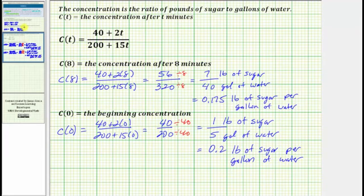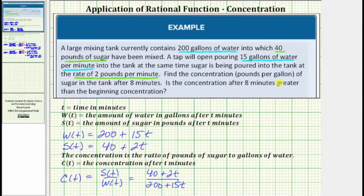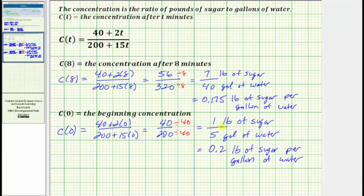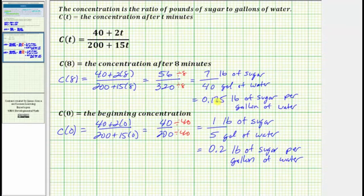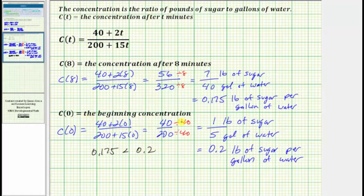The last question was: is the concentration after eight minutes greater than the beginning concentration? It's much easier to compare concentrations as decimals rather than as ratios. The concentration after eight minutes is 0.175 pounds of sugar per gallon of water. The beginning concentration was 0.2 pounds of sugar per gallon of water. After eight minutes, the concentration is less than the beginning concentration. Because 0.175 is less than 0.2, the concentration after eight minutes is less than the beginning concentration.